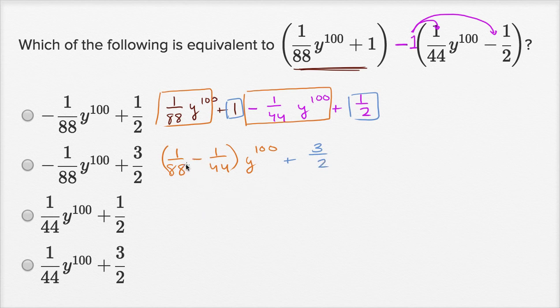So 1 88th minus 1 44th. Well, the common denominator here could be 88. That is the least common multiple of 44 and 88. 88 is divisible by 44. So if we multiply the denominator by 2, you get 88. Multiply the numerator by 2, you get 2. 2 88ths is the same thing as 1 44th. So this is 1 88th minus 2 88ths.